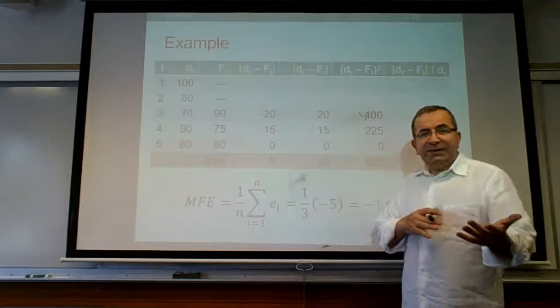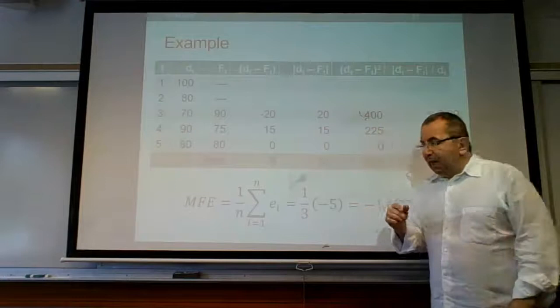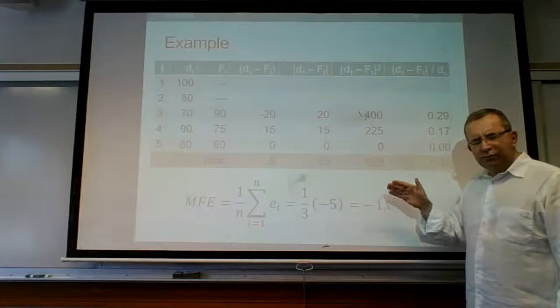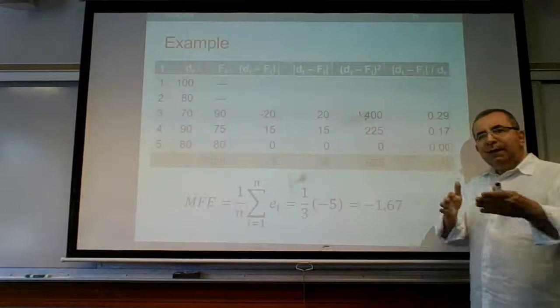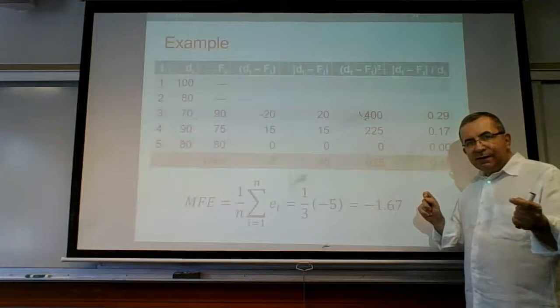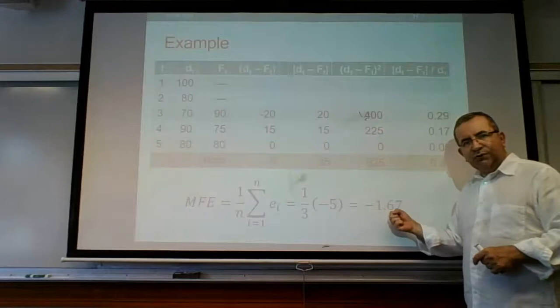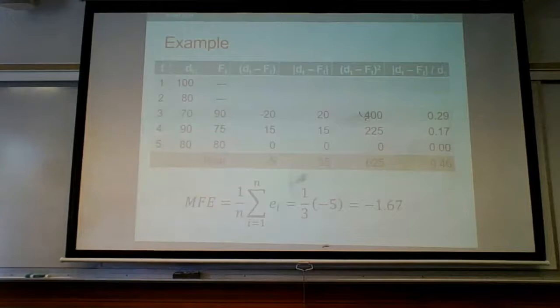You can compare two forecasts by computing the MFE for N equals 2 and N equals 3. The N that gives a smaller MFE — closer to zero — is less biased. Let's do this example in Excel right now.